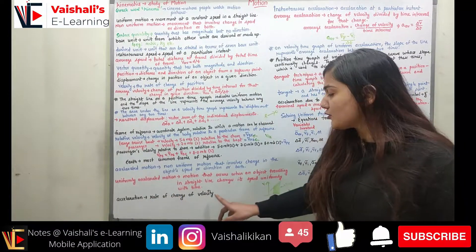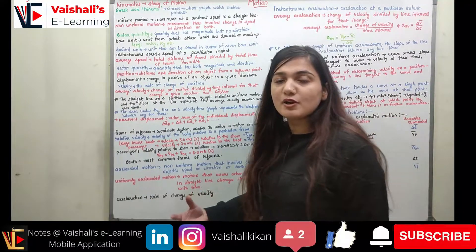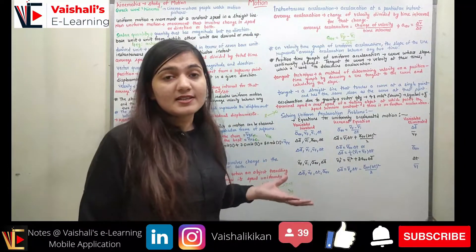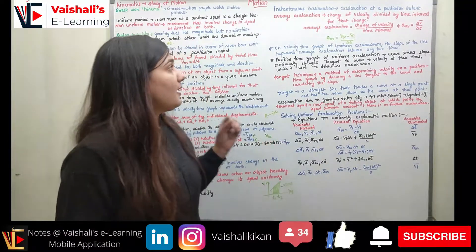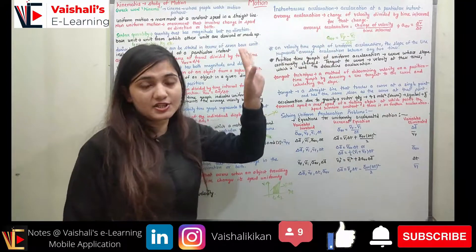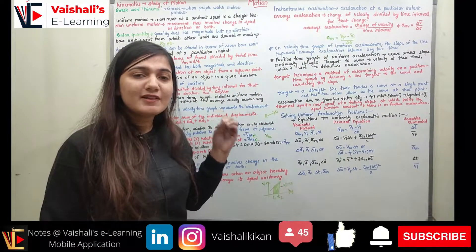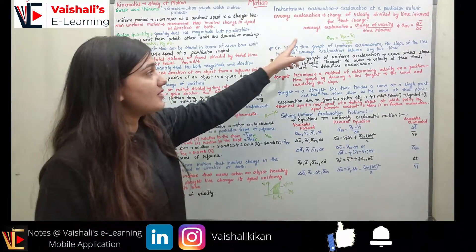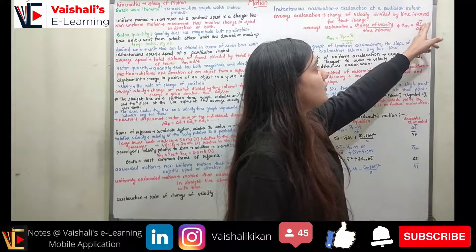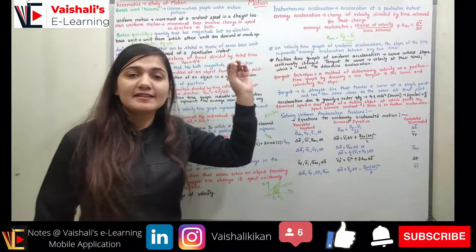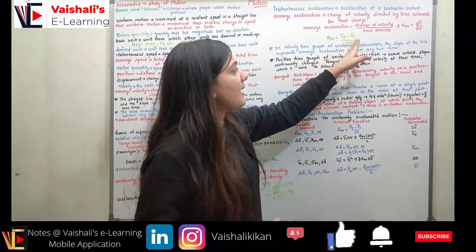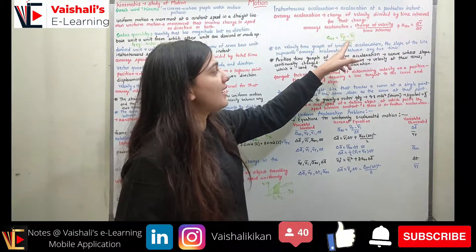Acceleration is the rate of change of velocity. Instantaneous acceleration is the acceleration at a particular instant. Average acceleration is the change in velocity divided by the time interval: a_average = ΔV / ΔT = (V_f − V_i) / ΔT. The bar over the velocity symbol indicates it is a vector quantity.